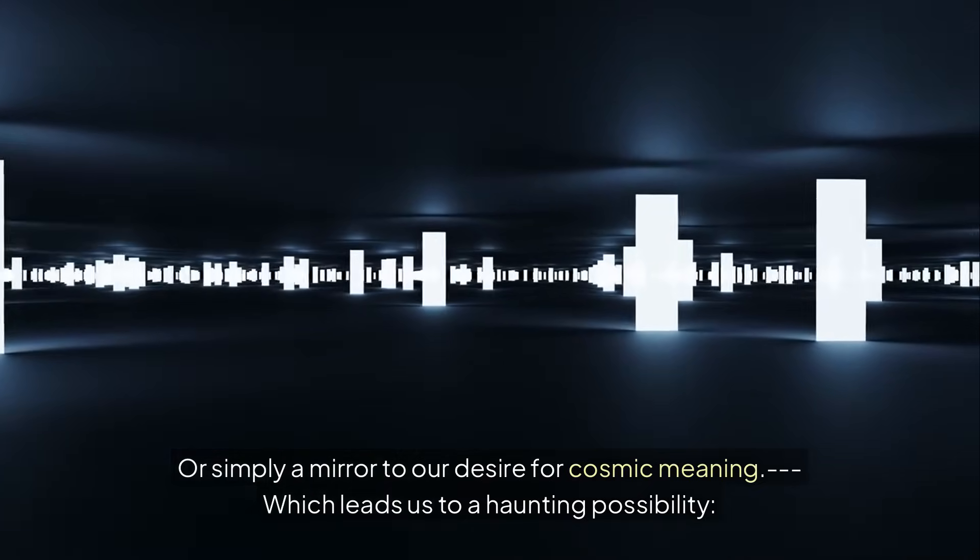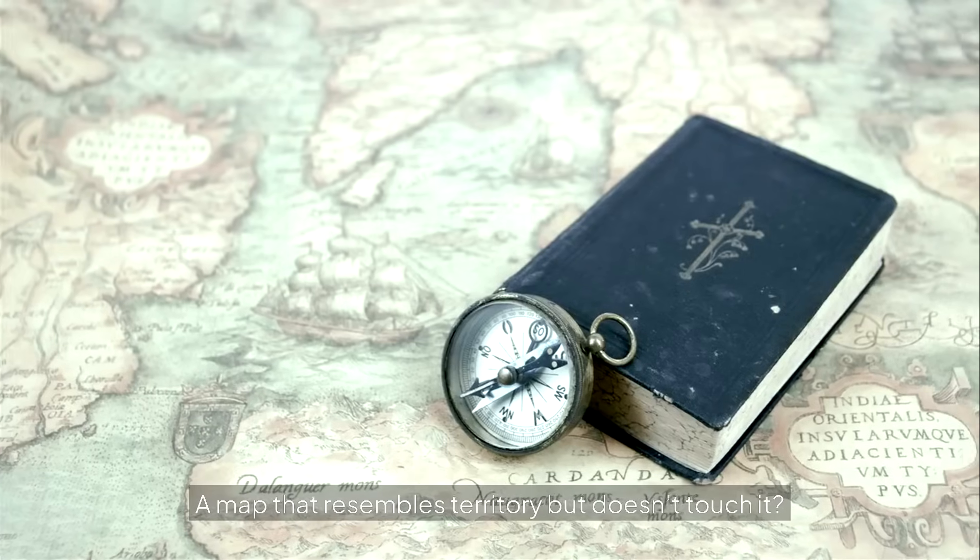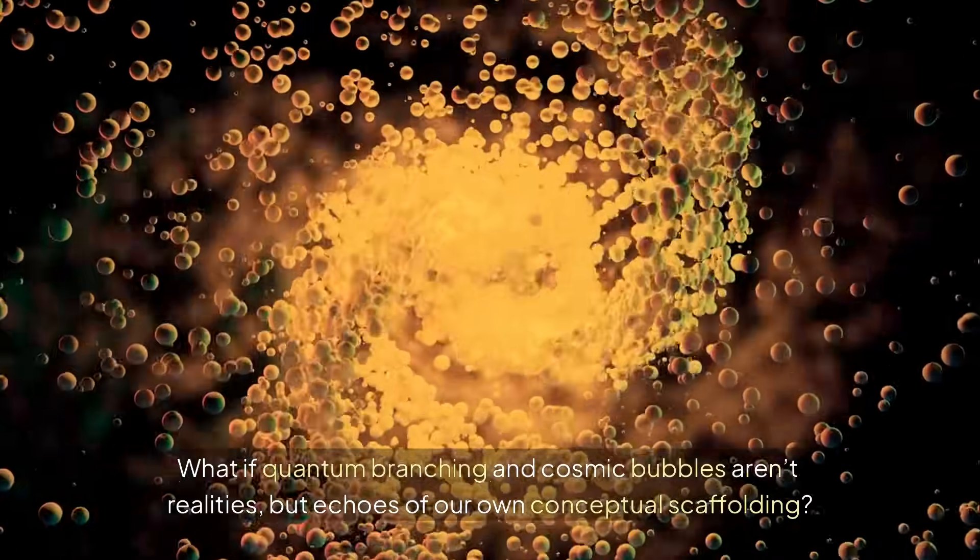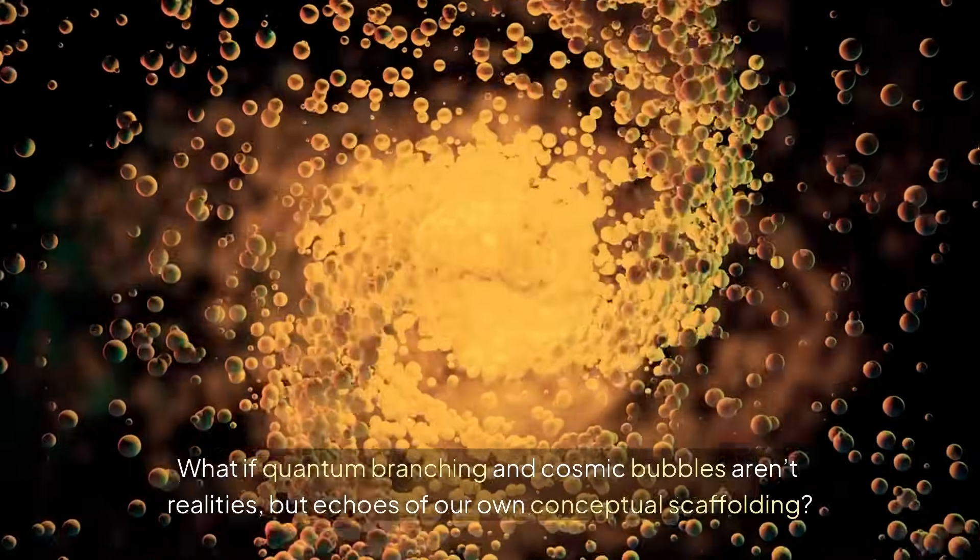Which leads us to a haunting possibility: what if the multiverse is a mathematical illusion, a map that resembles territory but doesn't touch it? What if quantum branching and cosmic bubbles aren't realities, but echoes of our own conceptual scaffolding?